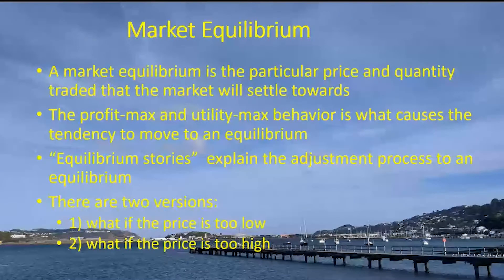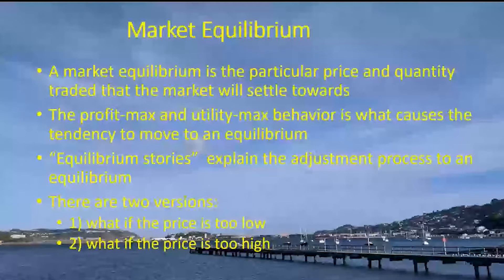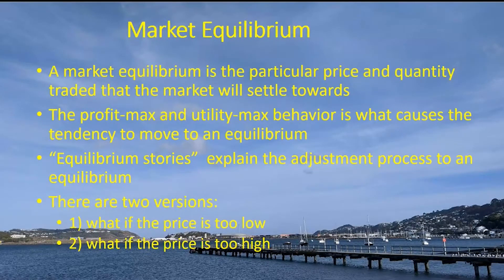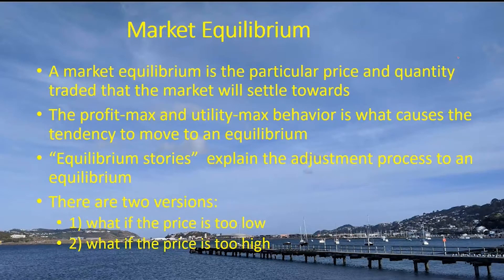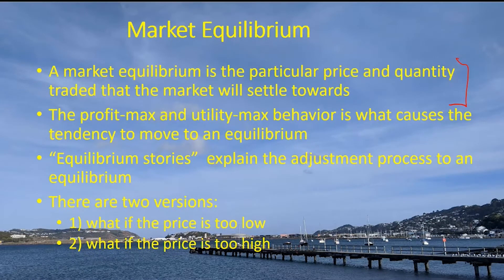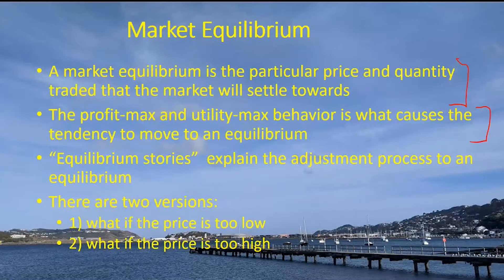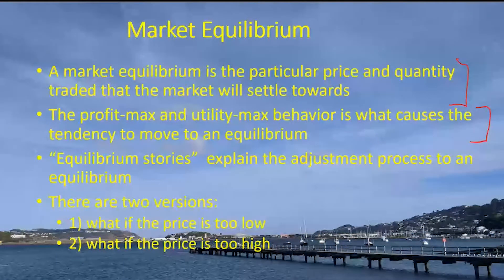We're going to imagine that the price is going to revert and end up at what we'll call the equilibrium price, and the quantity is going to settle down towards a particular quantity in the market — that will be called the equilibrium quantity. Both profit maximizing on the part of firms and utility maximizing behavior on the part of consumers is what's going to cause the tendency to move to equilibrium prices and quantities.